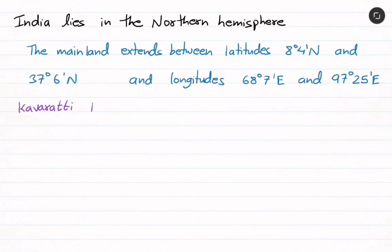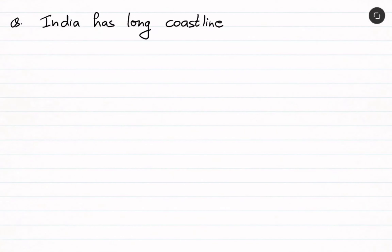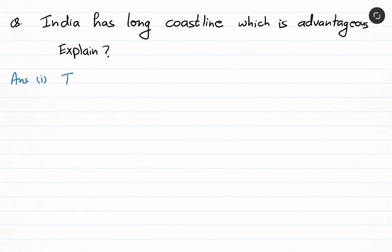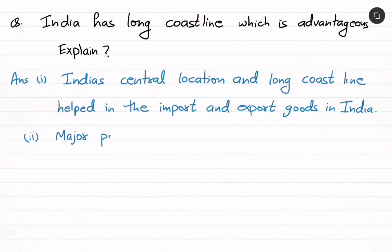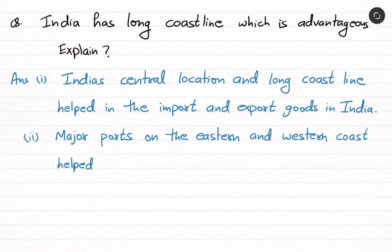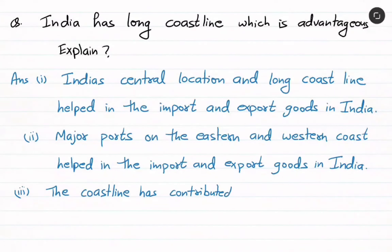There is an island called Kavaratti Island in Lakshadweep, which lies in the Arabian Sea. Here is a question for you: India has a long coastline which is advantageous — explain why. India's central location and long coastline helped in the import and export of goods. Major ports on the eastern and western coast helped in this trade, and the coastline has contributed to the exchange of ideas and culture.